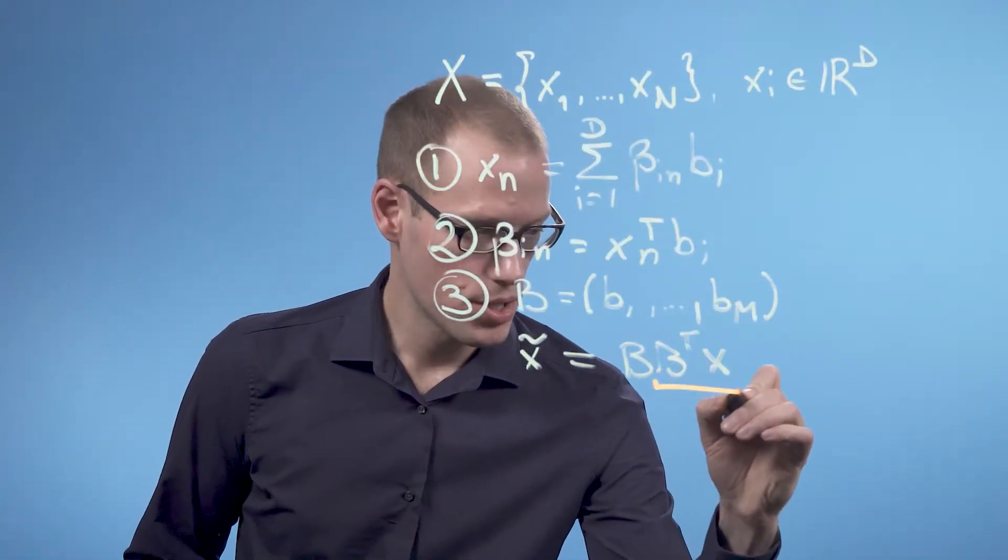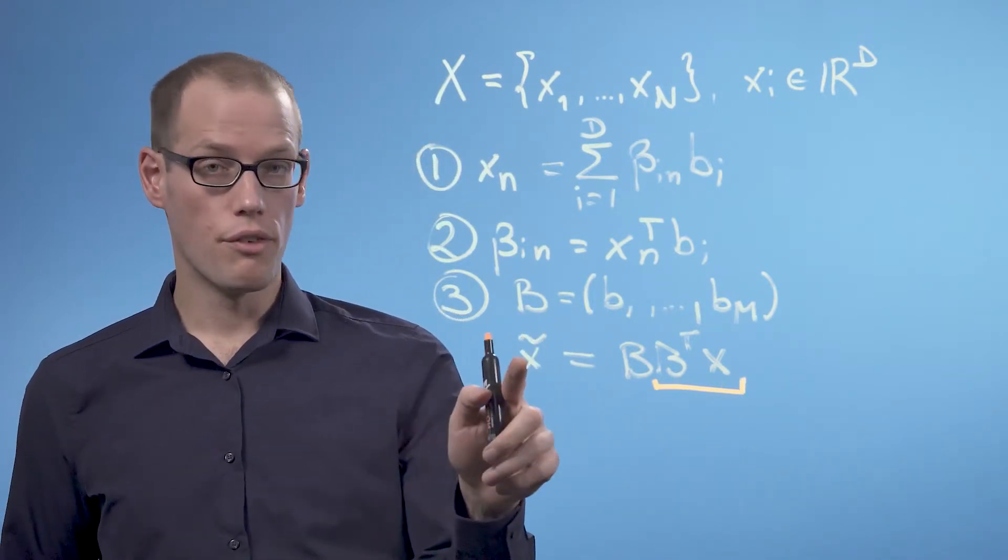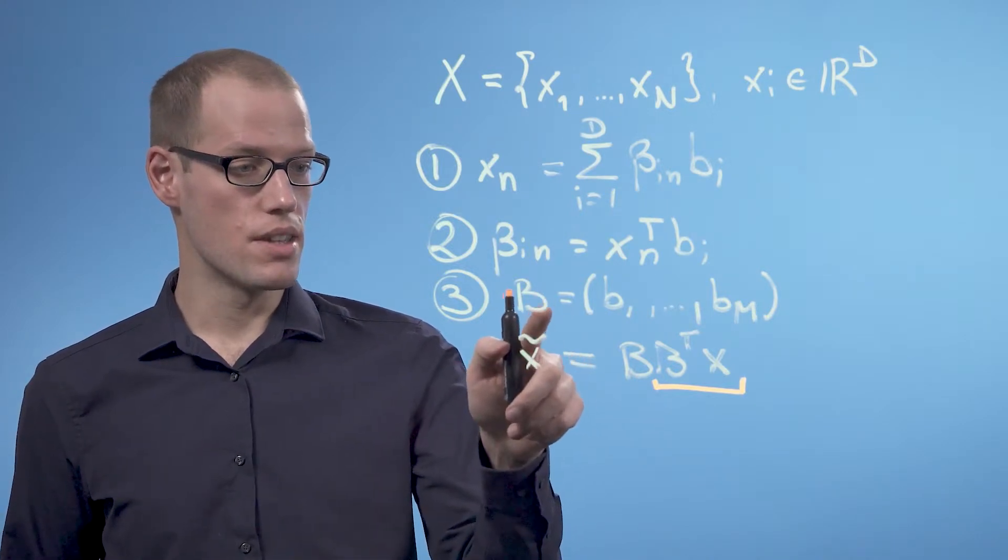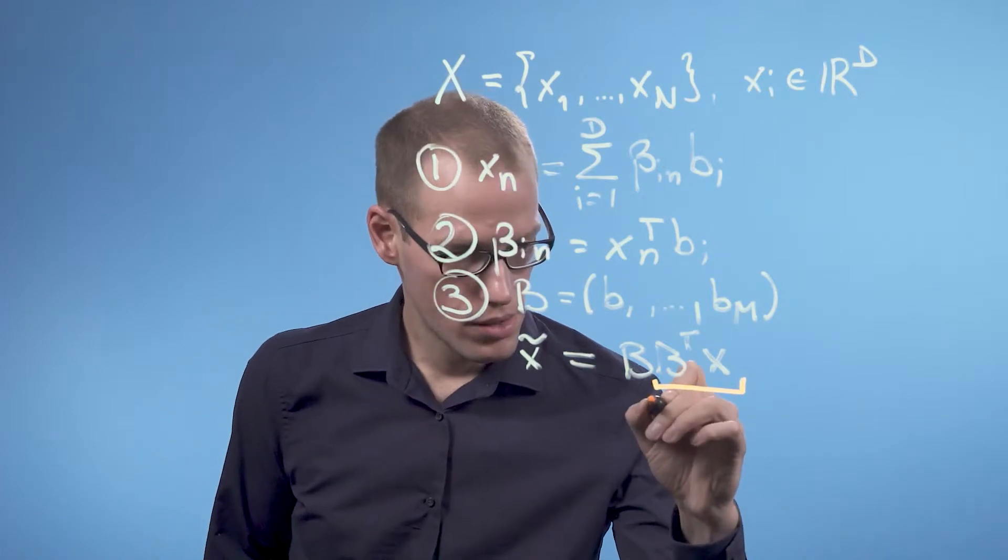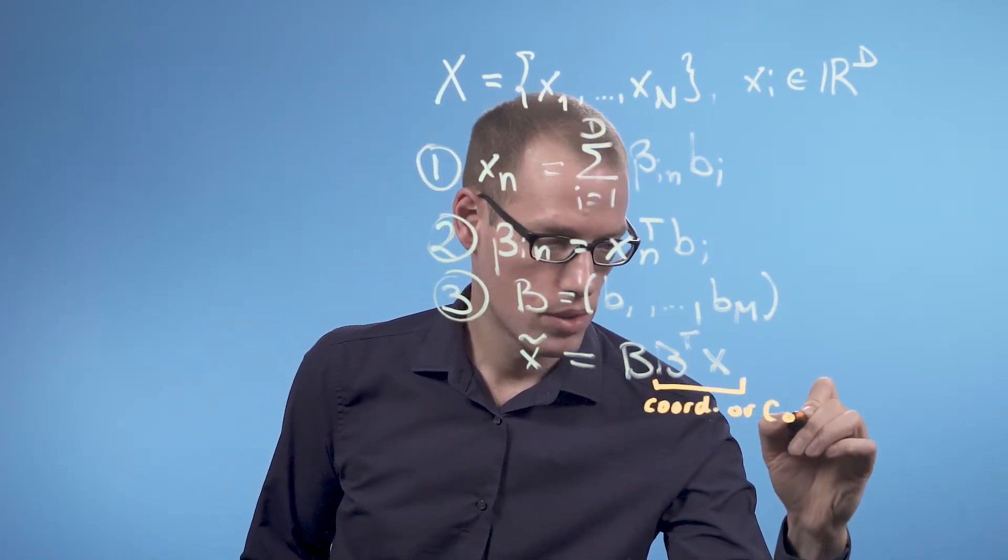And B transpose times X are the coordinates of X tilde with respect to the basis vectors collected in the matrix B. This is also called the code, so coordinates or code.